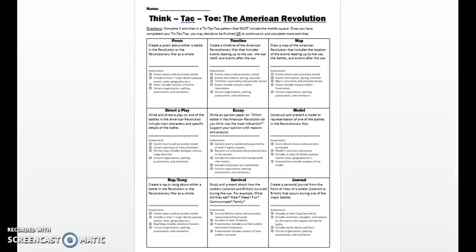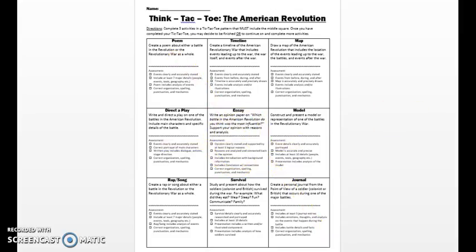This is what the think-tack-toe looks like as a whole. All students will be doing this middle section and then they can choose two other options. Some kids like to have that tic-tac-toe form in a row or across or however they want to go, but I'm really not going to limit them to having a straight line — it's just a fun way for them to think about and do different activities. Also, each of the activities focuses on a different multiple intelligence, so I wanted to be able to give options for every single student.